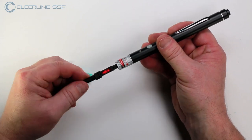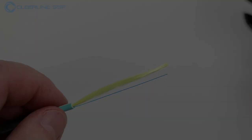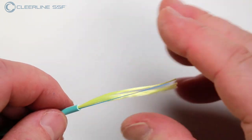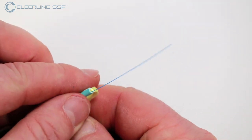After that, open the hinge on the rear of the connector. Pulling the aramid yarns back, locate the SSF glass fiber.